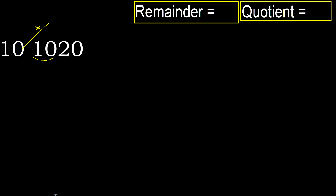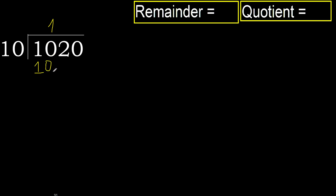but not greater. 10 multiplied by 2 is 20, which is greater. Multiplied by 1 is 10, it is not greater. Subtract: 10 minus 10 equals 0.